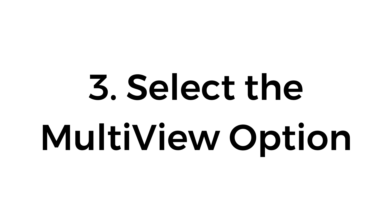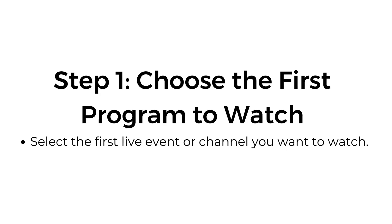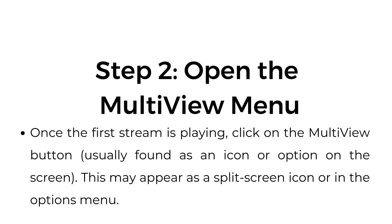Number three, select the Multiview option. Step one, choose the first program to watch: select the first live event or channel you want to watch. Step two, open the Multiview menu: once the first stream is playing, click on the Multiview button, usually found as an icon or option on the screen.